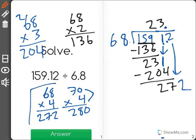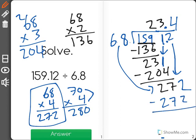When I solve 68 times 4, I find out it has a total of 272, showing me that 68 fit into 272 4 times exactly, leaving us with no remainder, and our correct answer of 23.4.